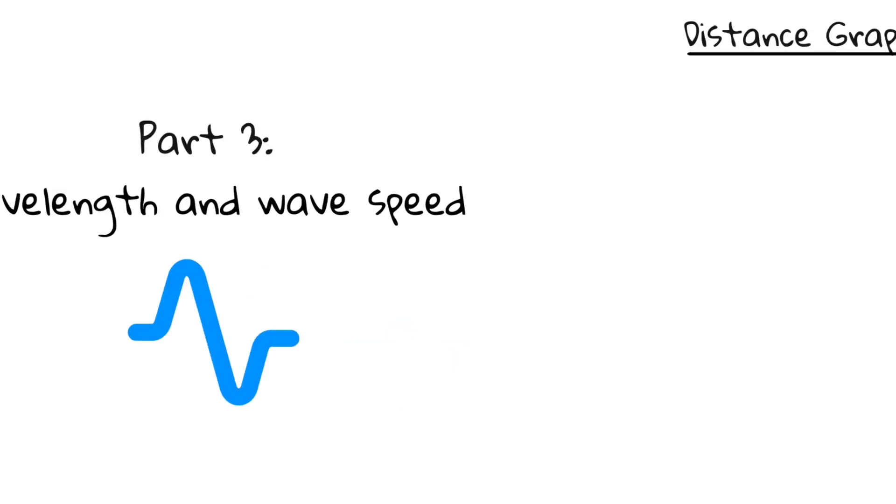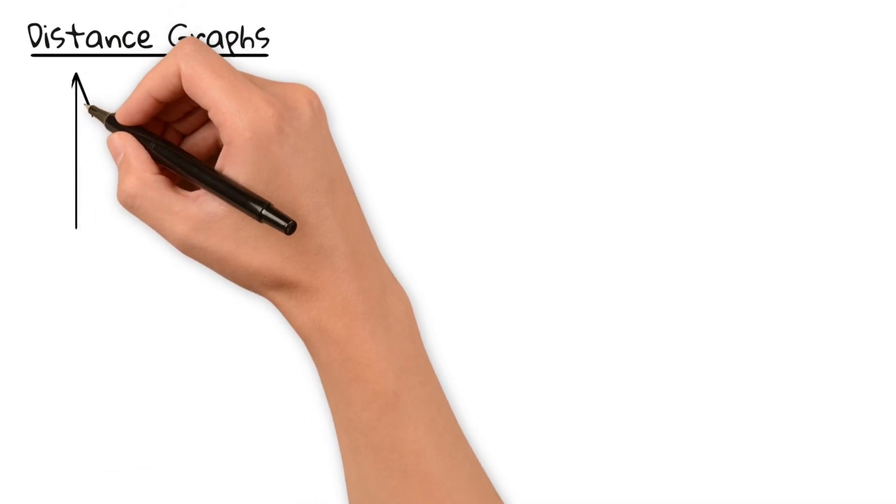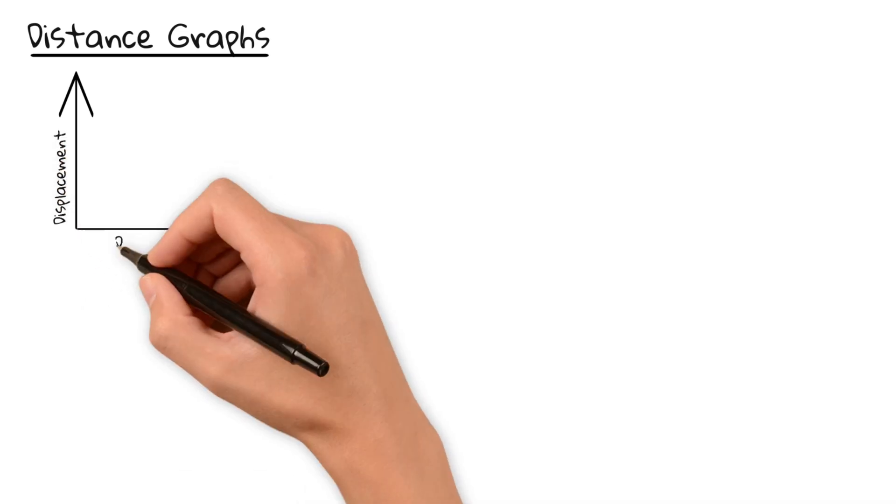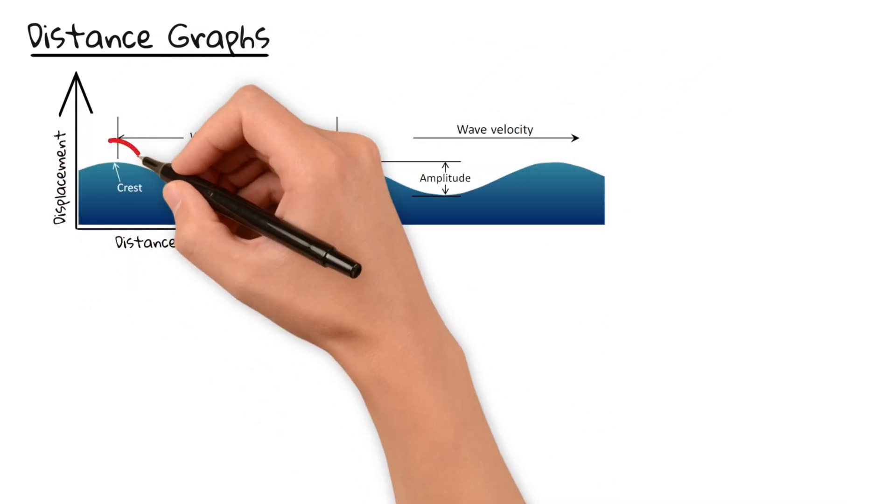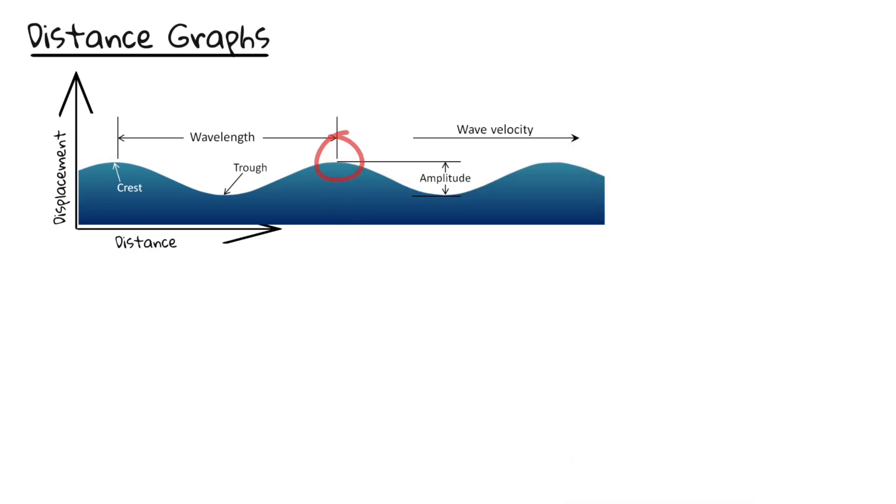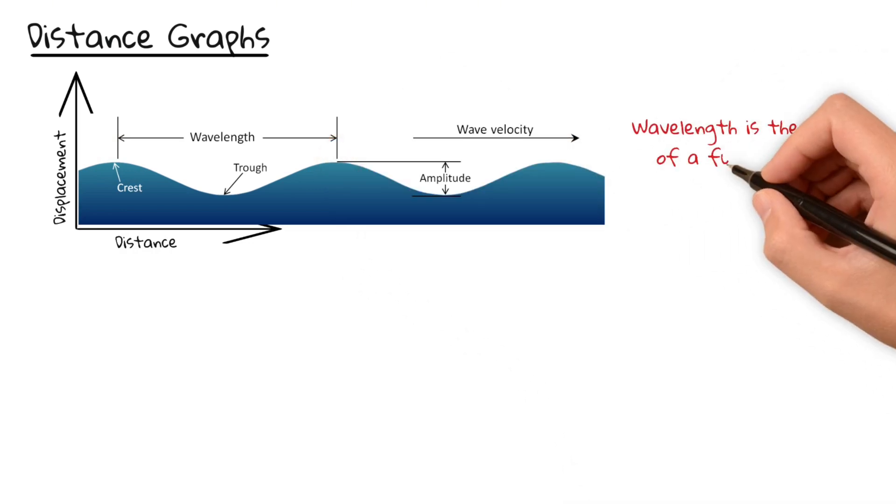Now let's change our perspective. If we look at the wave from the side and plot displacement against distance, we can see the wavelength. That's the distance from one peak to the next. It tells us how long the wave is.